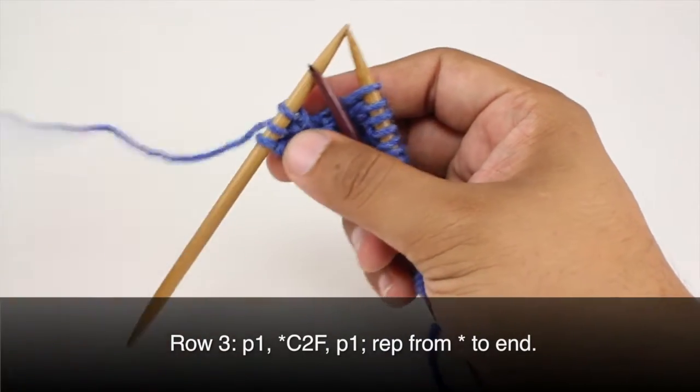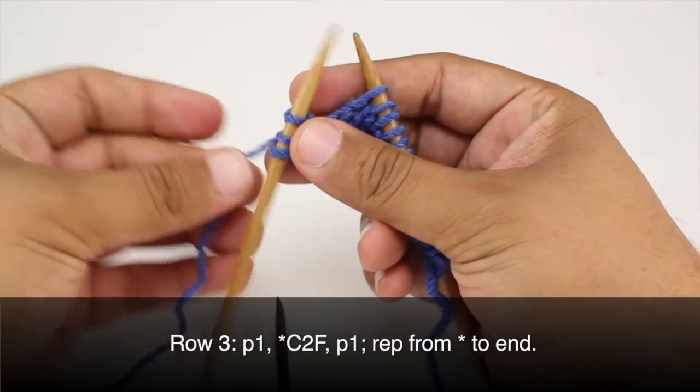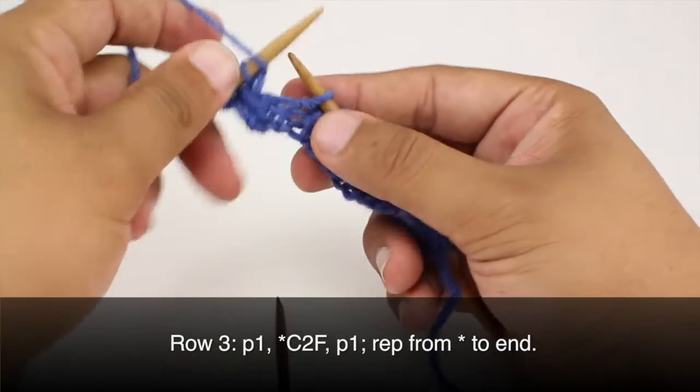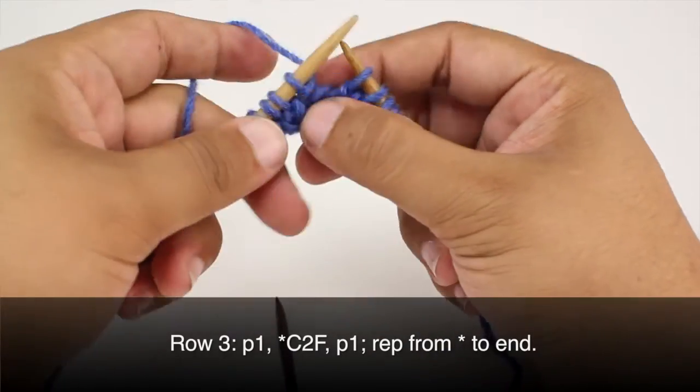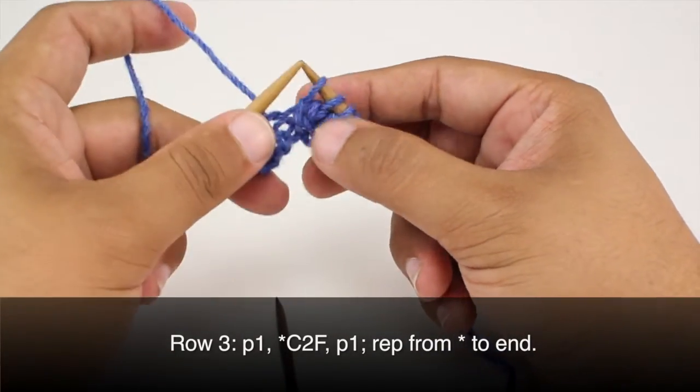And then we'll finish up our repeat by doing a purl 1. Now if you don't want to do the cable 2 forward and use a cable needle we can do a left twist stitch.